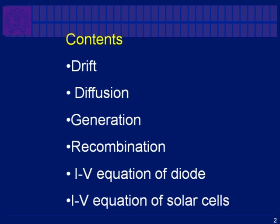We will look at PN junction theory. The basic points are: the carriers, the drift of the carriers, diffusion of the carriers, and generation and recombination. These are the four major things that happen — drift, diffusion, generation, and recombination — and this is how you define the device operation.